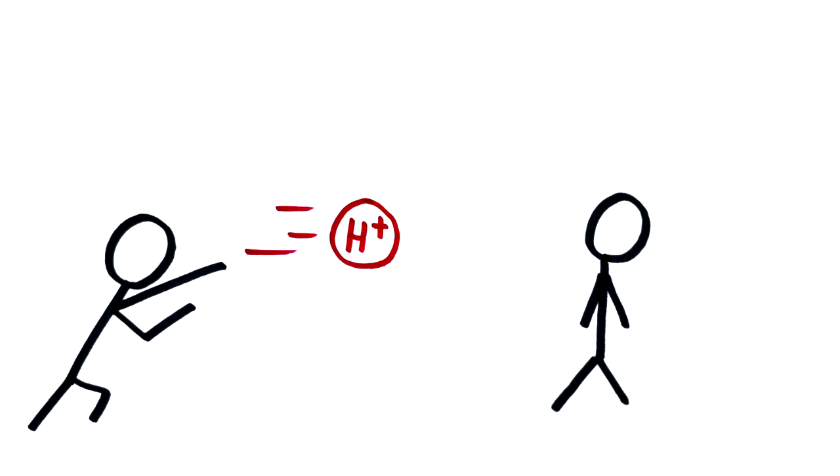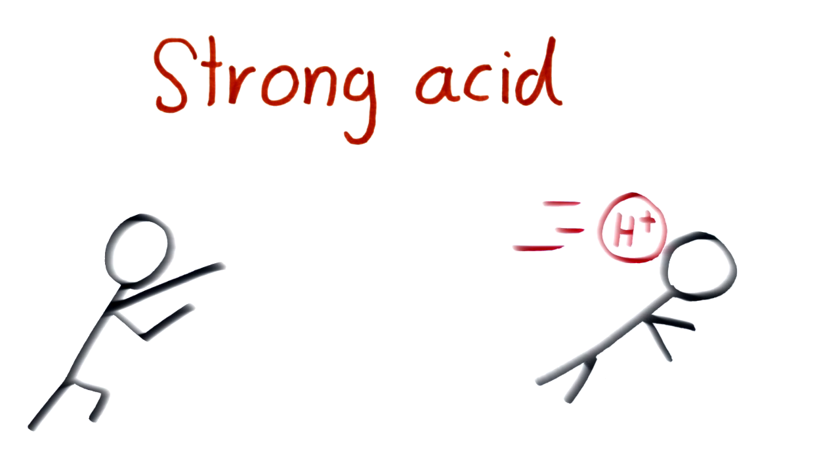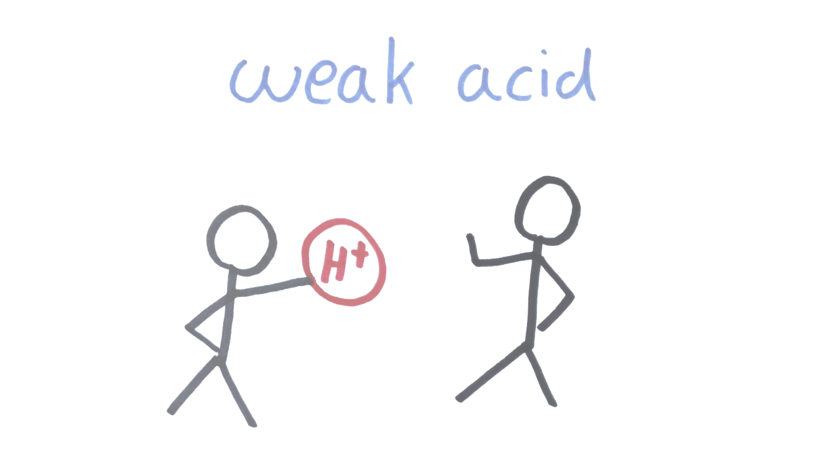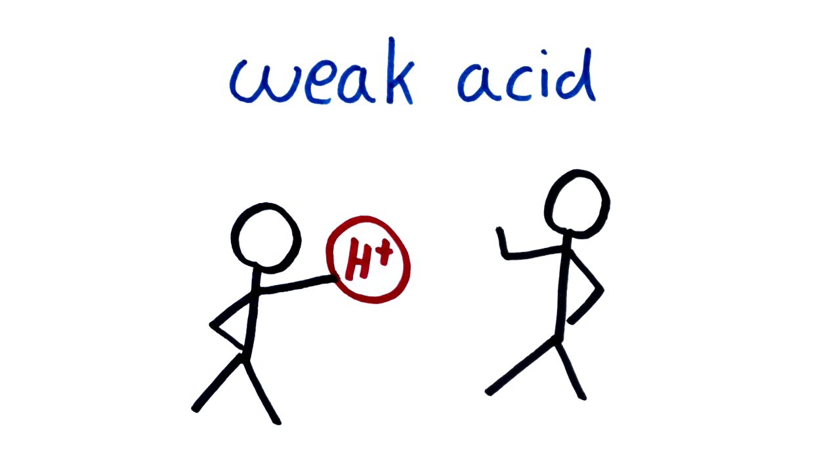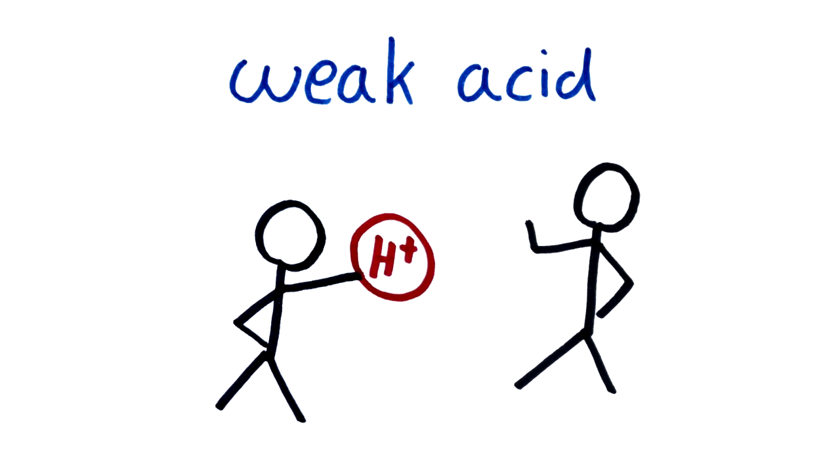But let's first talk about how we define the strength of an acid. The acidity of a substance basically characterizes the ability of the substance to transfer protons to other molecules. Strong acids have a strong proton donor strength, weak acids a weak one.